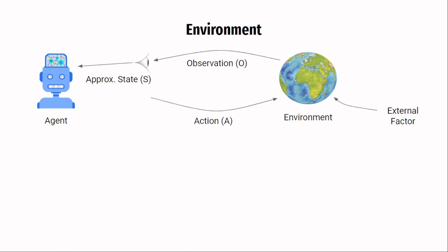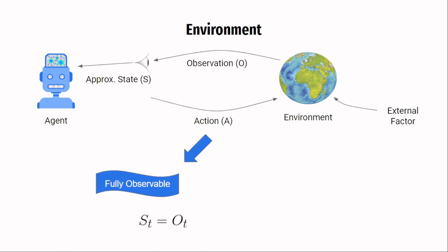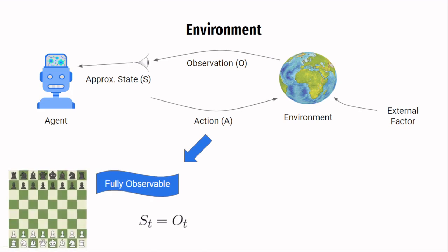Now, partly true is the fact that the state of the environment is completely hidden from the agent. Environments where the agent can make out the exact state from the observation itself are called fully observable environments. For example, typical board games like chess where the agent can make out the entire state just by looking at the board and the positions of its pieces.